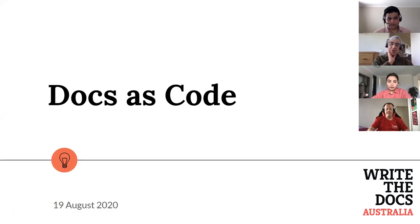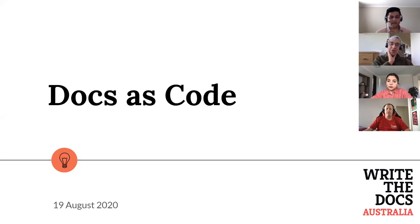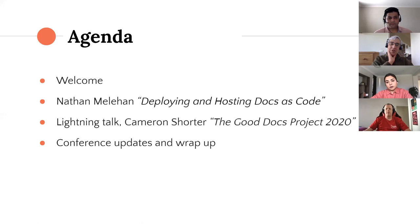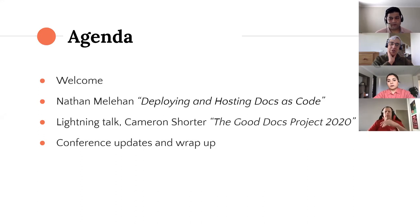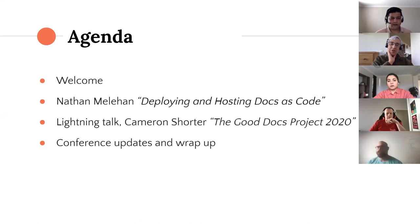I'll get started on an introduction of what we have planned for today. Docs as code is the central theme of our event. Nathan's going to talk about how to deploy and host docs as code. Then we've got a lightning talk by Cameron Shorter, who's working on the Good Docs Project. And we also have some updates on our conference coming up this December.